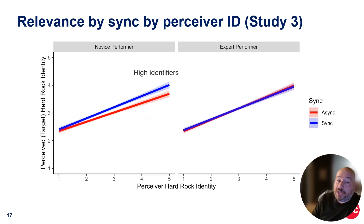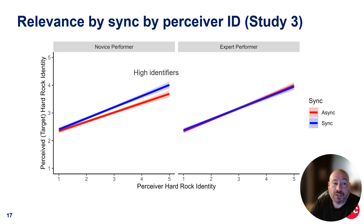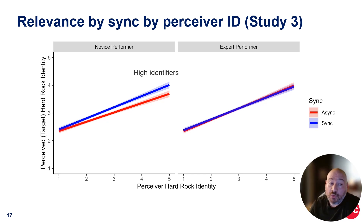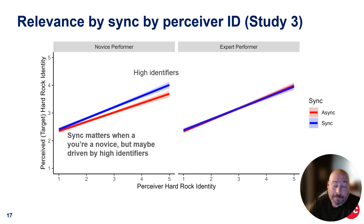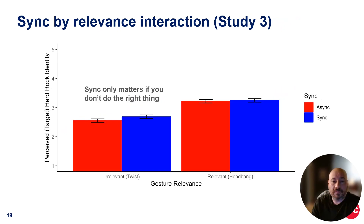Now in study three, when the music is introduced, the interaction was not where it was expected. We expected synchrony to be more relevant for experts, but that's not what happened — it actually became more relevant for novices. High identifiers actually look at the novice and distinguish: when the novice, who's probably not moving exactly right, is moving in synchrony, they get a little bonus; when they're moving out of sync, they get a little bit of a penalty. Traditional social theory would have said that people who identify as experts would be more critical of others claiming to be part of their in-group — that's not at all what this shows. Basically, sync matters when you're a novice, but it seems to be driven by these high identifiers who are perceiving outsiders differently — but positively, as the means are almost identical between them. And sync only seems to matter when you're not doing the right thing: if you're moving irrelevantly, that's when sync matters.